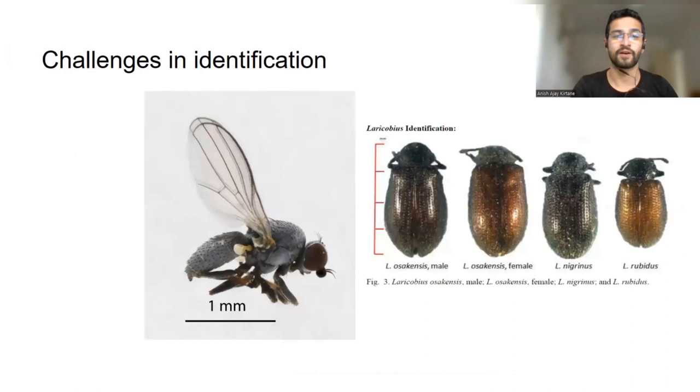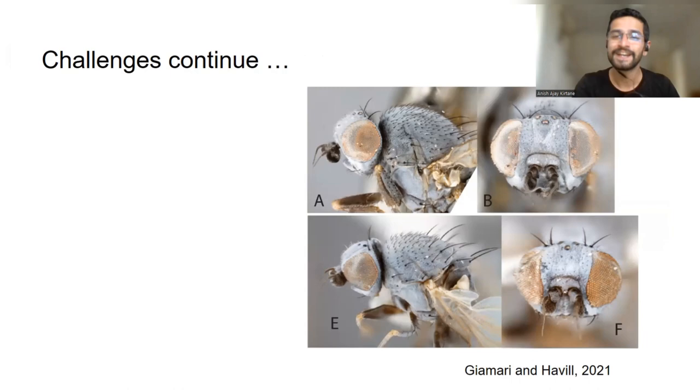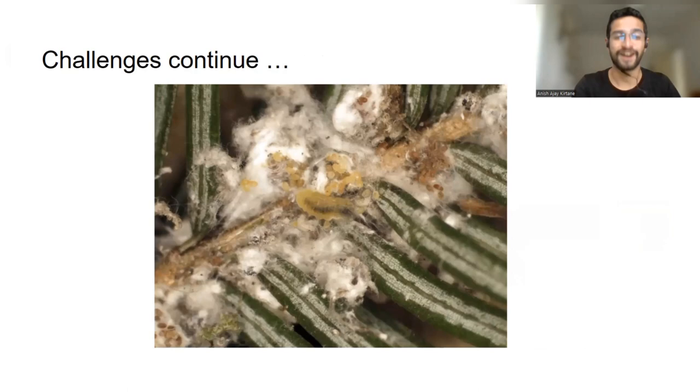On top of that, you also have the predators, which are not easy to identify. The beetle looks like any other small black beetle to a common entomologist. And then you also have the silverflies, which also look really like each other. The two species look very similar morphologically. And you really need a very trained eye to tell them apart. On top of that, it's not the adults that are the predators. You really want the larvae, which are even harder to spot and even more difficult to tell apart.